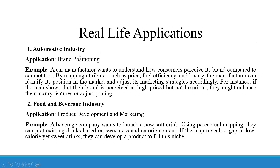Real-life applications: first, the automotive industry — brand positioning. A car manufacturer wants to understand how consumers perceive their brand compared to competitors. By mapping attributes such as price, fuel efficiency, and luxury, the manufacturer can identify its position in the market and adjust its marketing strategies accordingly. For instance, if the map shows a brand perceived as high-priced but not luxurious, they might enhance their luxury features or adjust pricing.